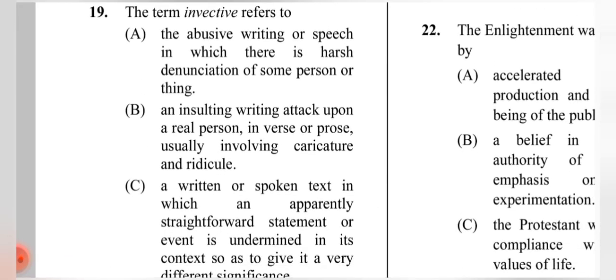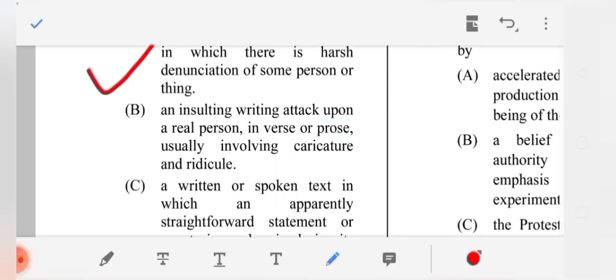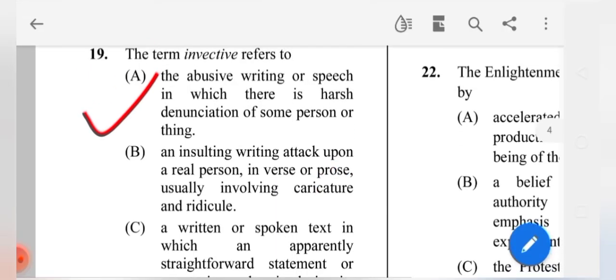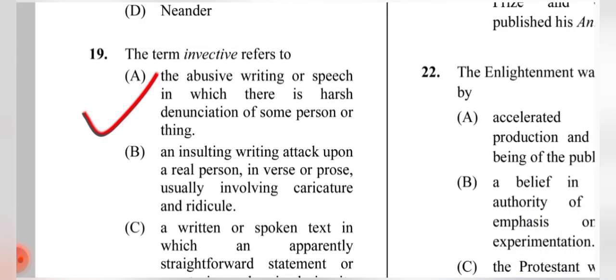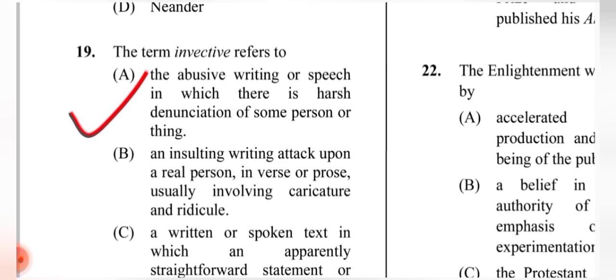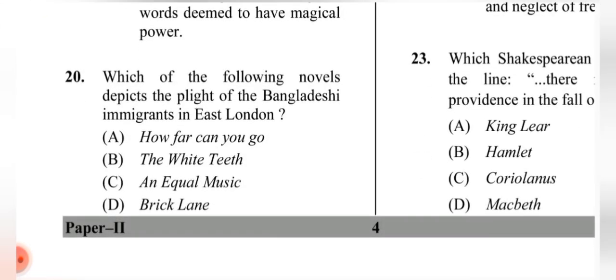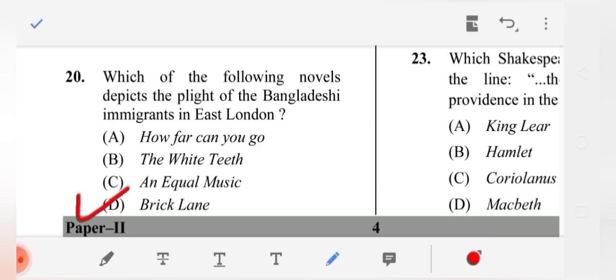Question 19: The term 'invective' refers to — the correct answer is (A) abusive writing or speech in which there is harsh denunciation of some person or thing. Question 20: Which of the following novels depicts the plight of Bangladeshi immigrants in East London? The correct answer is (D) 'Brick Lane.'